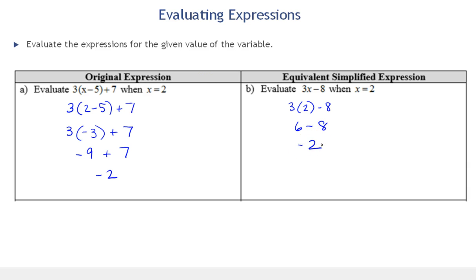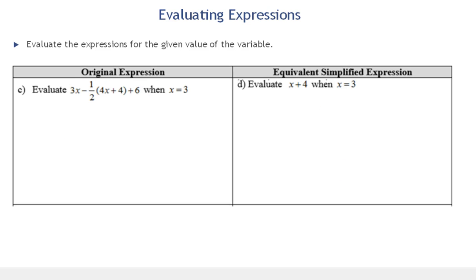Let's look at the next one: evaluate 3x minus the product of one-half and the sum of 4x and 4, plus 6, when x equals 3. This one looks kind of complex — you can see why we like to simplify — but let's practice evaluating when x equals 3. Notice there's more than one place we'll have to replace x with 3.